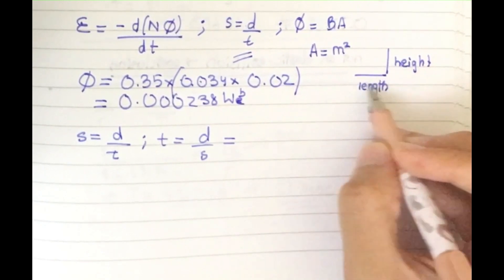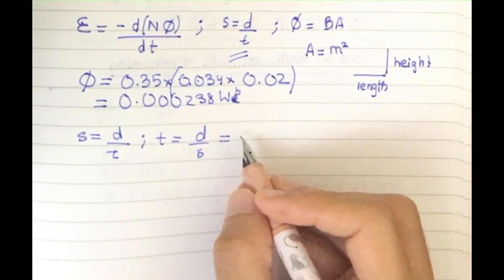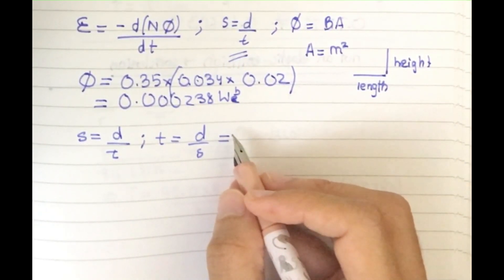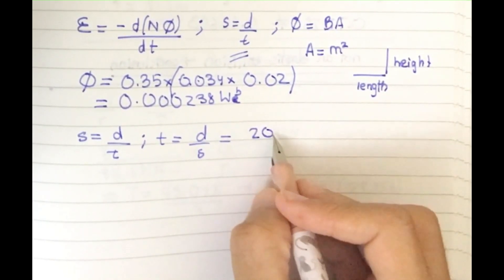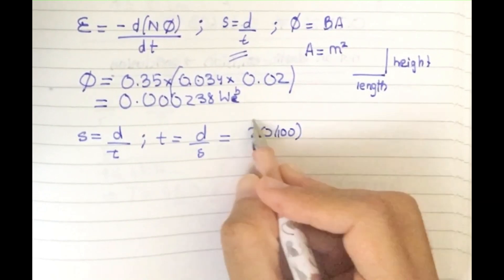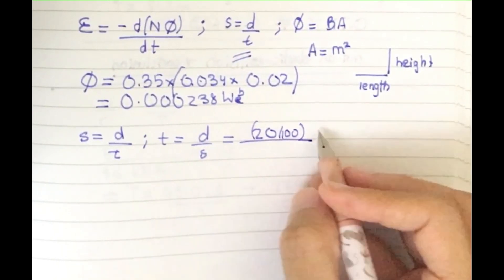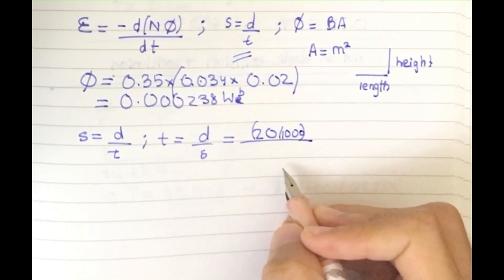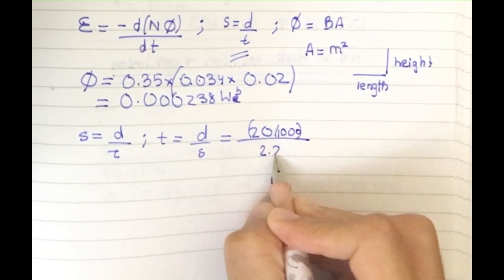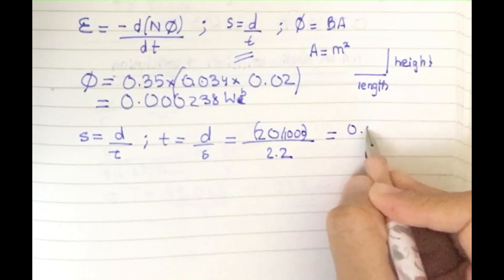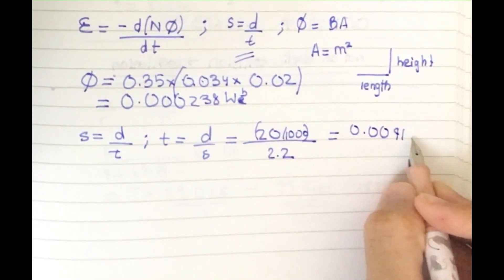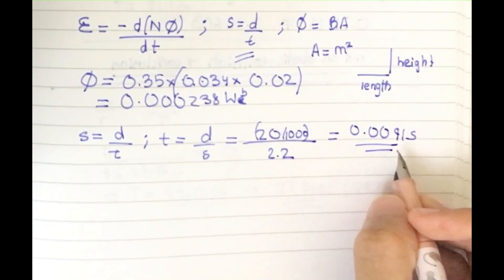The value for the height is 2 divided by 1000 to convert it into meters, and then you have 2.2. You get your value as 0.0091 seconds.